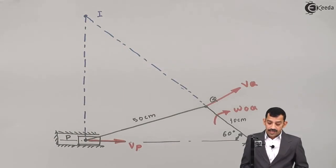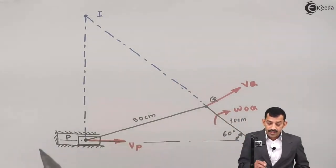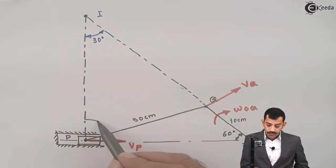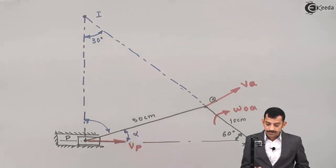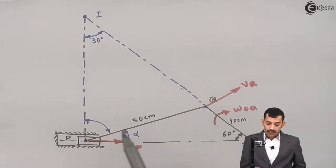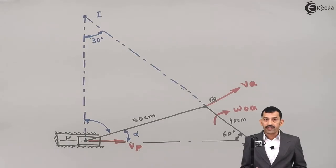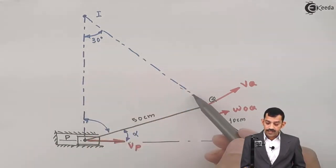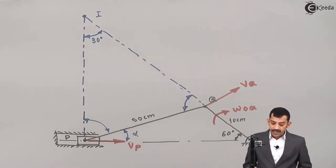To find lengths IP and IQ, we need the inclinations in triangle IPQ. This angle is 60 degrees with the horizontal, so this angle is 30 degrees with the vertical. We need angle alpha — the inclination of PQ with the horizontal. We'll find angle alpha from triangle OPQ by applying the sine rule, since one length and its opposite angle are known. Once we get alpha, 90 minus alpha gives the inclination of IP with PQ, and 180 minus those two angles gives the third angle.